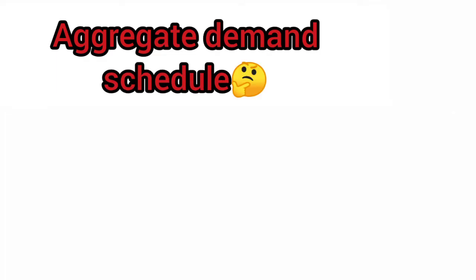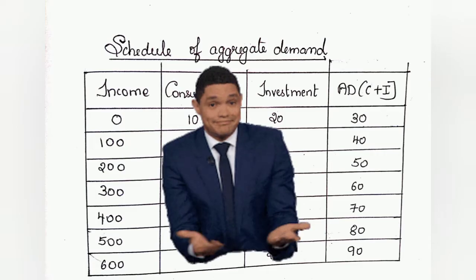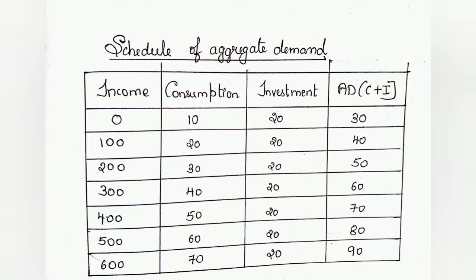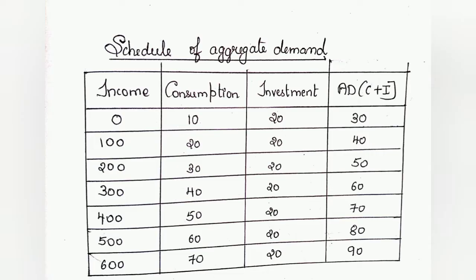Now we shall see the schedule of aggregate demand. You might not find this schedule in your NCERT textbook — they go directly to the graph. But to understand the graph, it is very important that you also understand the schedule. I have put an imaginary schedule here with very basic numbers — there is no need to memorize this schedule, you can use your own numbers.